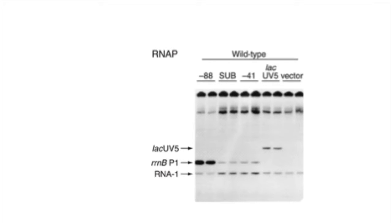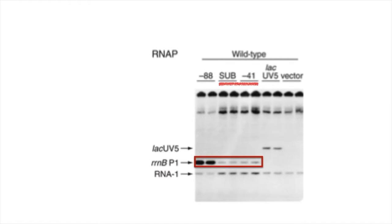For the experiment, we compare the bands created by the RRNB promoter. Looking at the lane 88 — with the UP element and the promoter — we get dark bands showing that a lot of transcription occurred. Comparing those to the bands from the 41 or the substitution lane, they are much lighter, revealing less transcription. The difference is that those lanes don't have the UP element. In all three lanes we have the negative 10 and negative 35 regions, which is why transcription occurs in all three. But in the negative 88 lane, the UP element provides a third binding site, increasing the likelihood RNA polymerase binds.